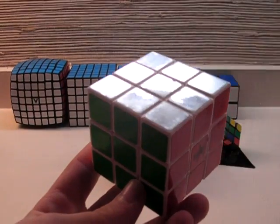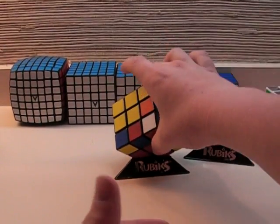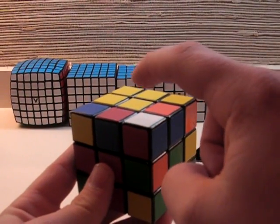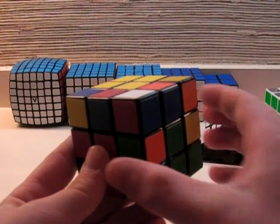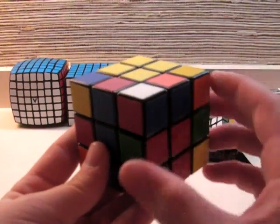On this cube, when this corner is in the correct spot, it will be between the white, red, and blue centers. So you position it above where it needs to go, by turning the up face. As you can see here.